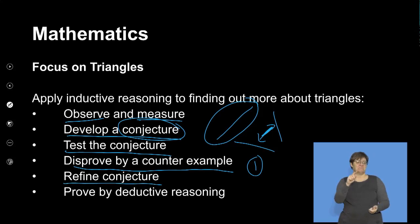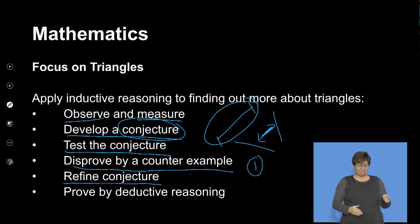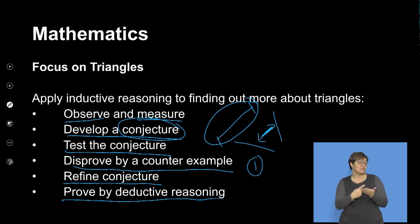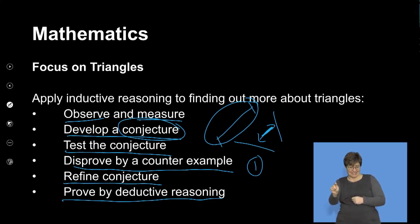Once you've disproved it, you refine the conjecture by saying: if we control the length of the longer side so that it equals the sum of the other sides or is less than the sum, it will always give me a triangle. That's what refining your conjecture looks like. Then lastly, you prove it by deductive reasoning, where you bring in the properties of these shapes based on geometry of 2D shapes.